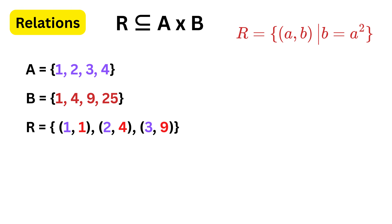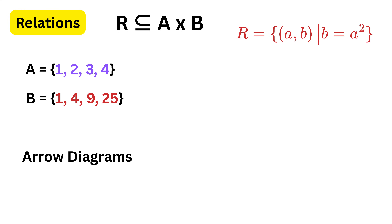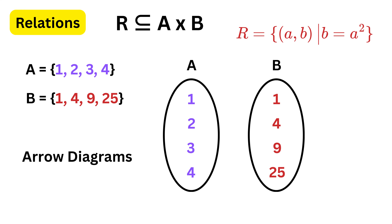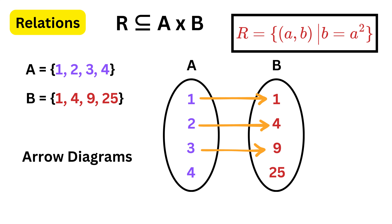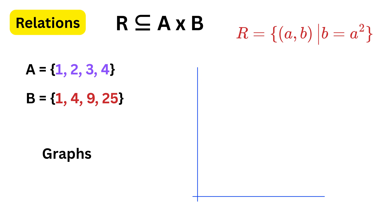Relations can be shown in different representation forms to make understanding easier. In roster form, we simply list all ordered pairs of the relation. In arrow diagrams, elements of the first set are drawn on one side and elements of the second set on the other side, with arrows showing connections. In graphical representation, ordered pairs are plotted on a graph where the first element is taken along the horizontal direction and the second along the vertical direction. Each method gives a different visual view of the same relation.